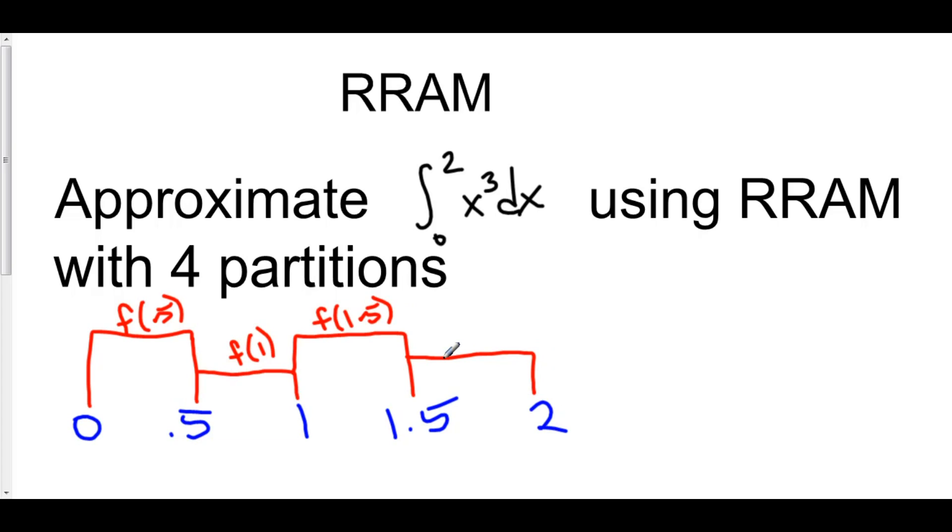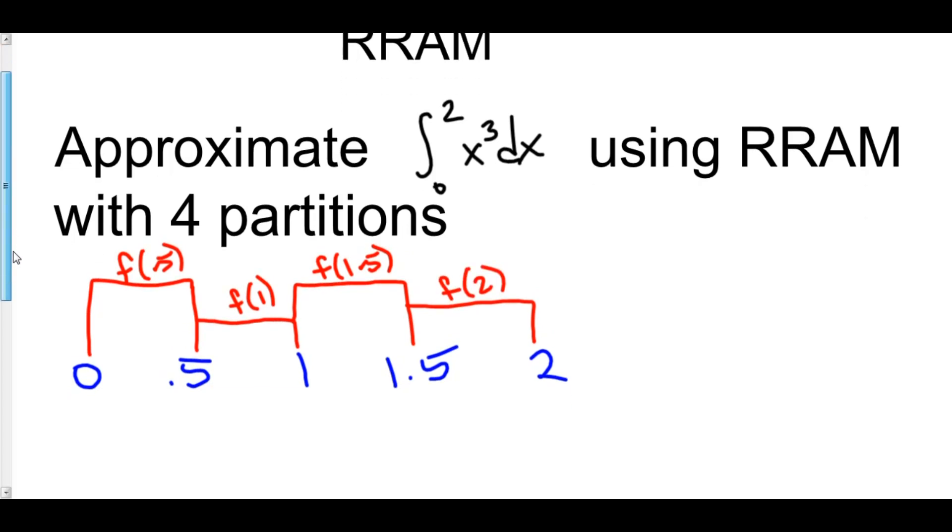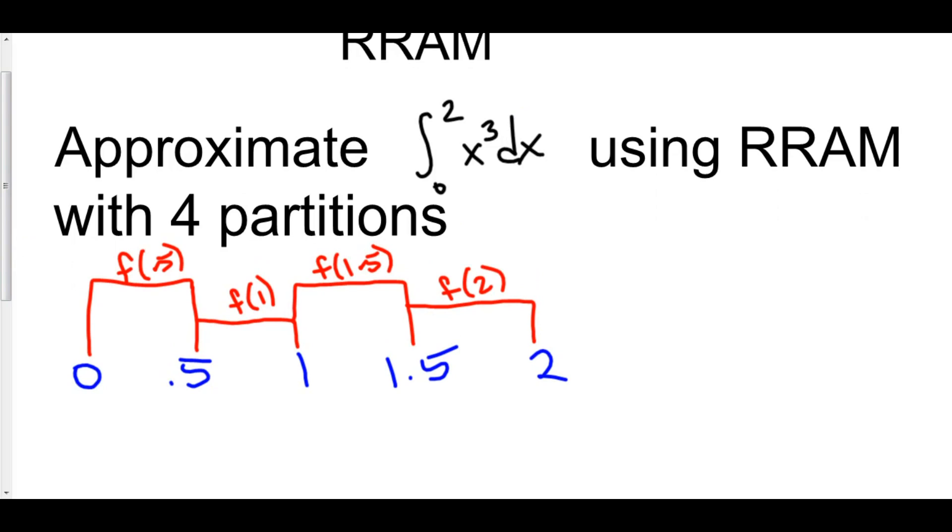Now, if you were right now to create your approximation formula, our h here is 0.5 times our first function value, or the height of the first rectangle, which is f of 0.5, plus the second one, which is f of 1,